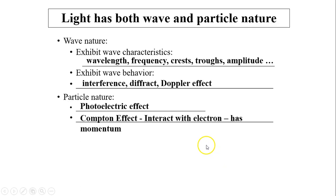Light has both wave and particle nature. So, wave nature. Light is a wave because it has characteristics of wave. Light is a wave because it has wave behavior. Light is a particle. There are two things to prove light is a particle. One is photoelectric effect, the other one is Compton effect. That's it for today. Thanks for watching.